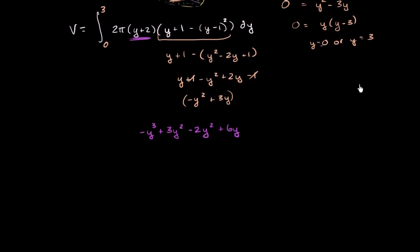So then you go all the way down here. This thing can simplify to, because you have 3y squared minus 2y squared. So this is going to be negative y to the third plus y squared plus 6y. So that's this entire part simplified.